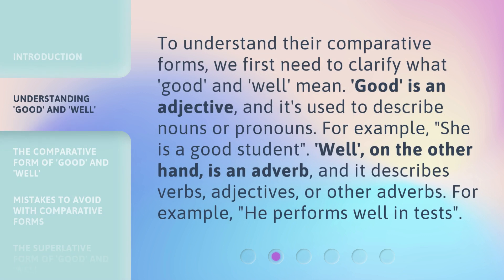To understand their comparative forms, we first need to clarify what good and well mean. Good is an adjective and it's used to describe nouns or pronouns. For example, 'she is a good student.' Well, on the other hand, is an adverb, and it describes verbs, adjectives, or other adverbs. For example, 'he performs well in tests.'